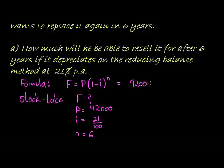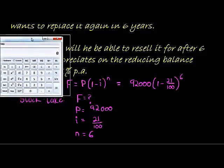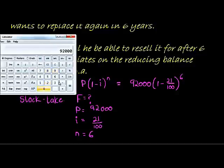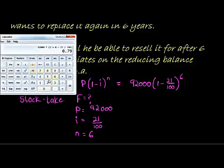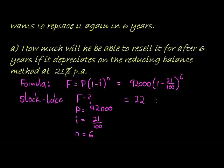We substitute into our formula: 92,000 times (1 minus 21 over 100) to the power of 6. Calculating this gives us R22,364.05. That is what Nick will be able to sell the old packaging machine for after six years.